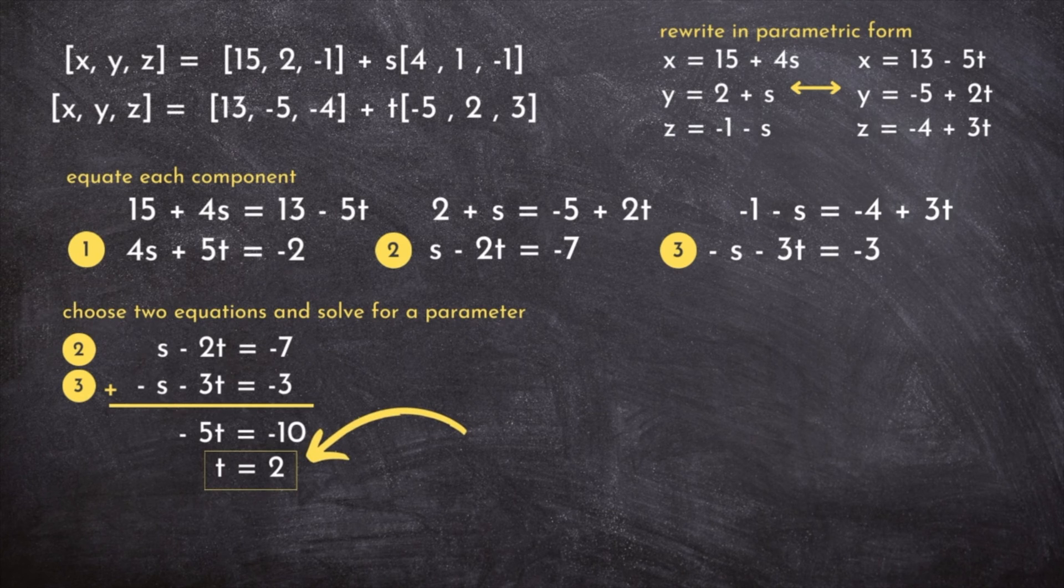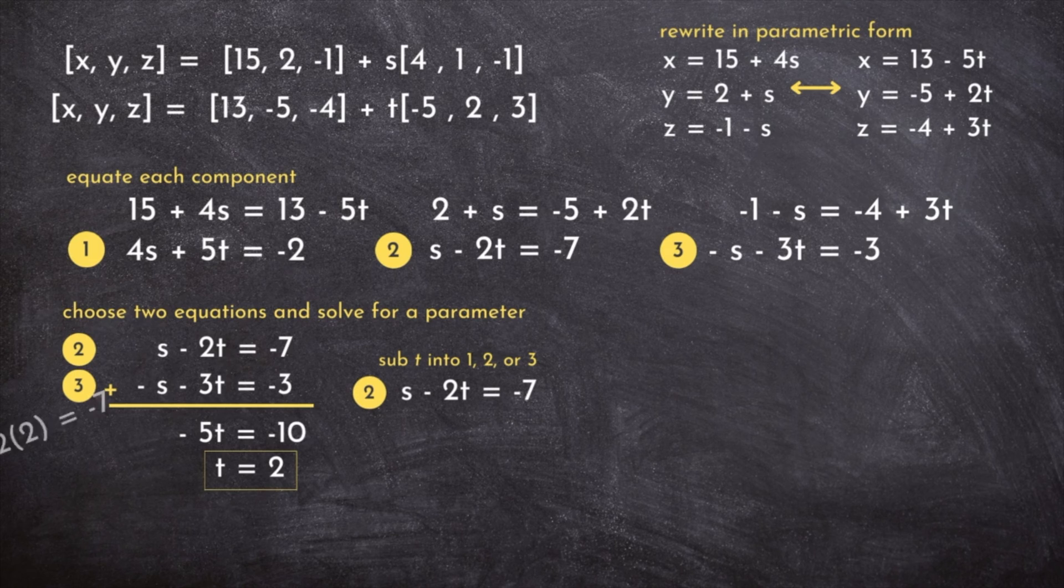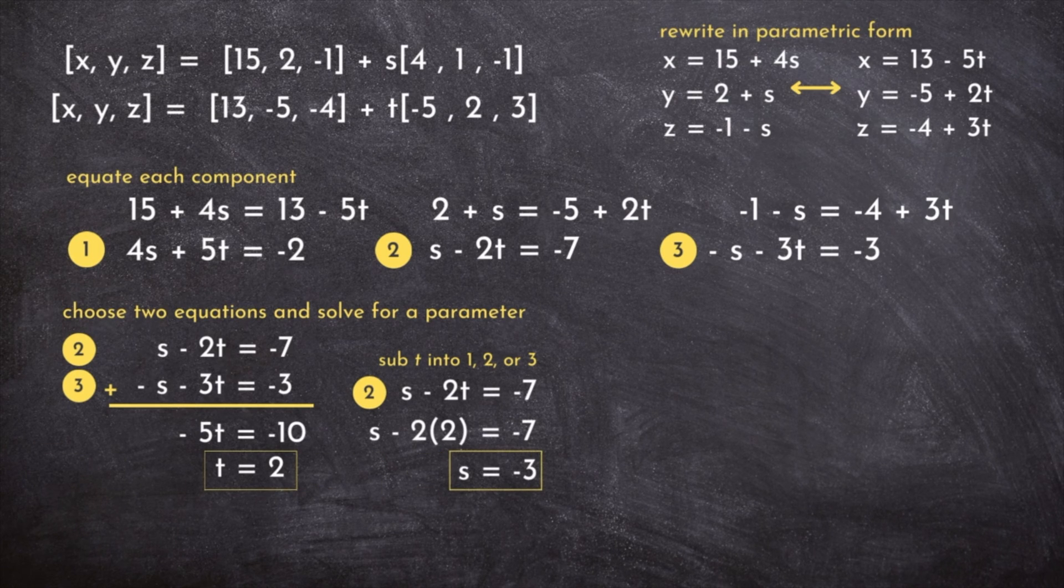That's great. We have one of our parameters. To get the other, we'll take t equals 2 and substitute it into either equation 1, 2, or 3. I'll pick equation 2, substitute in t, and solve for s, getting s equals negative 3.